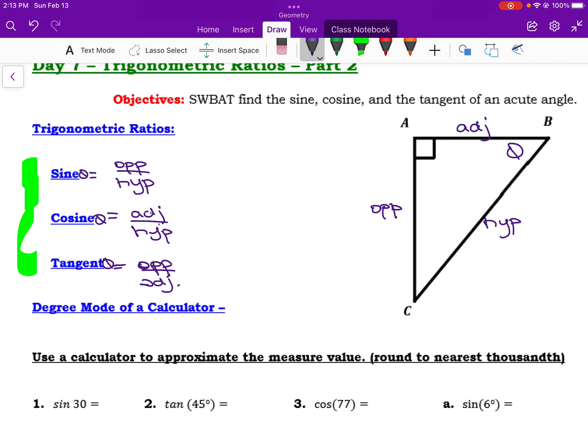So today we're going to actually be using our calculator to evaluate these ratios for angles that aren't very friendly. So when you are finding your degree mode, you want to be in this mode instead of radians.